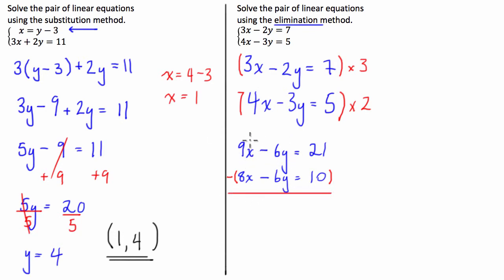So we have 9x subtract 8x is simply 1x or just x. Now negative 6y take negative 6y is like negative 6y plus 6y and that's just 0, and we have 21 take 10 is 11.